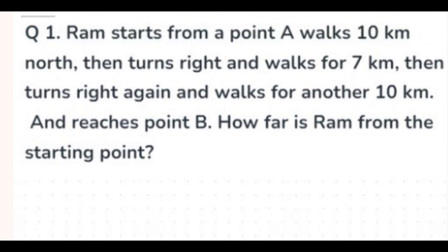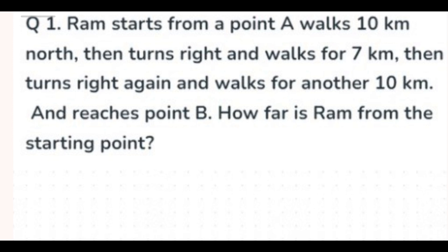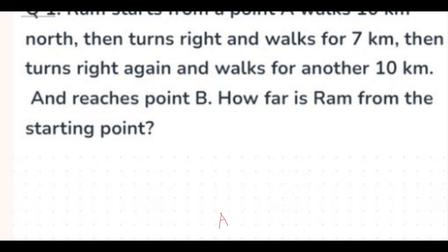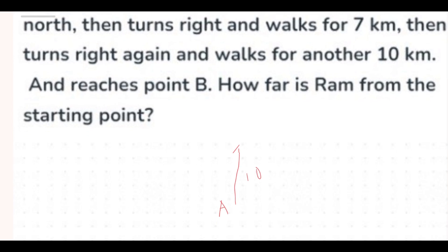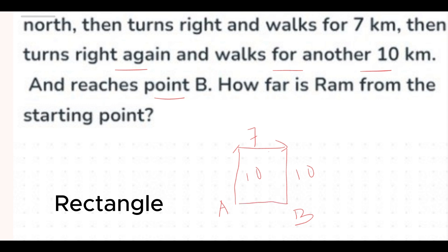The first question: Ram starts from point A, walks 10 kilometers north. Whenever you read a question, start drawing — it makes solving easier and saves time. So let's say point A is here, and he walks 10 kilometers north. Then he turns right and walks 7 kilometers, then turns right again and walks another 10 kilometers, reaching point B.